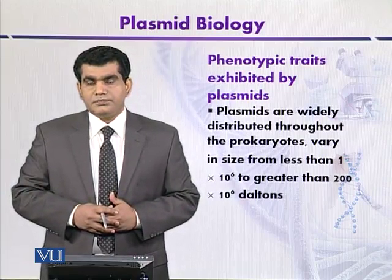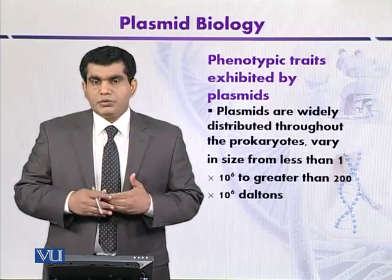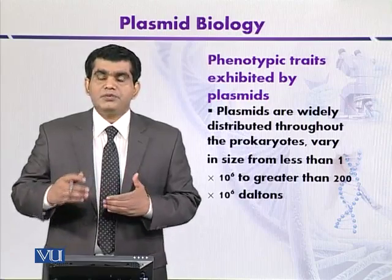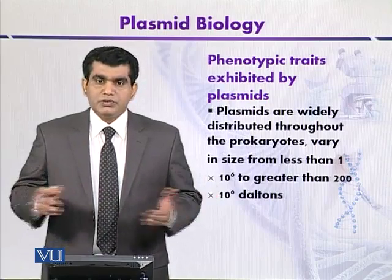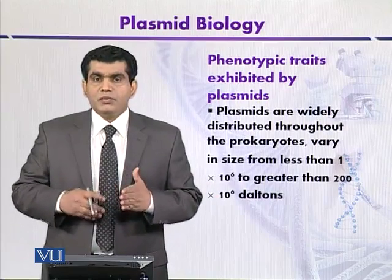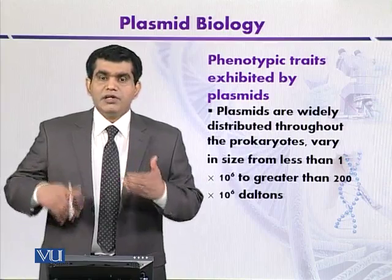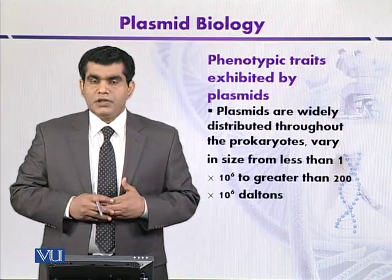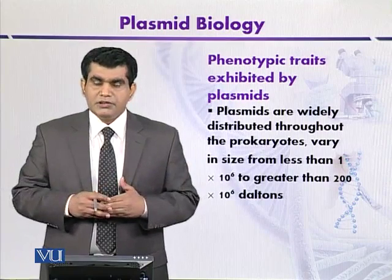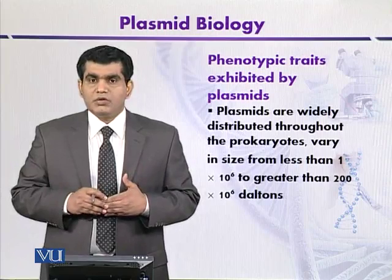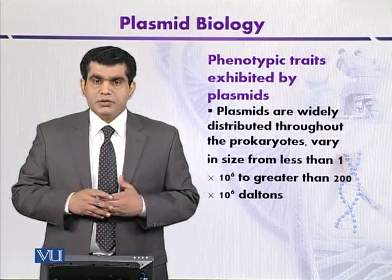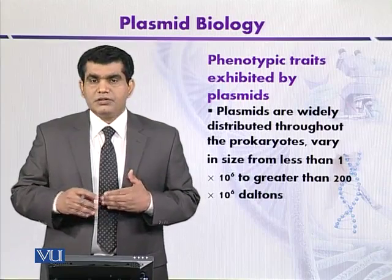Secondly, plasmids are not only introducing antibiotic resistance, but they also help microbes to produce different types of antibiotics. When microbes are producing antibiotics and living in nature, other competitors present within the environment can be killed because of the action of those antibiotics produced by the plasmid-containing microbes.